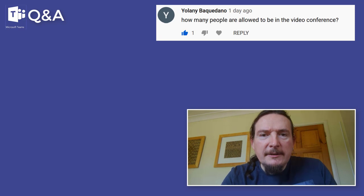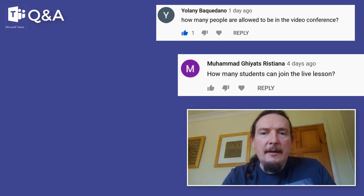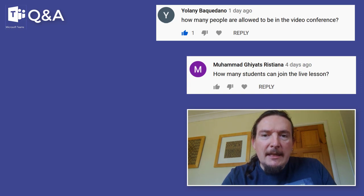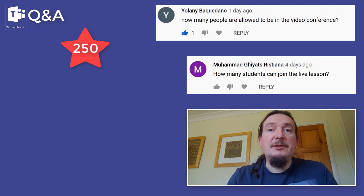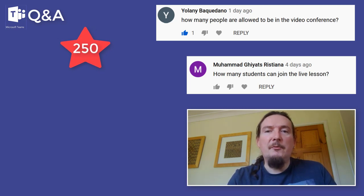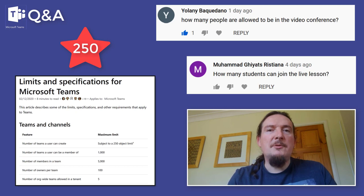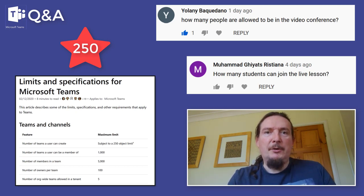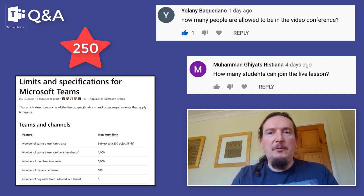Yelani Bakwadano and Ristiana both ask: how many people are allowed to be in a video conference, and how many students can join the live session? The maximum number is 250, which is loads — if you've got a class bigger than that I don't know what you're teaching. I found all this information in a useful document online and will link to it below. It has all the data about how many people you can have in a group and how many groups you can have in attendance.